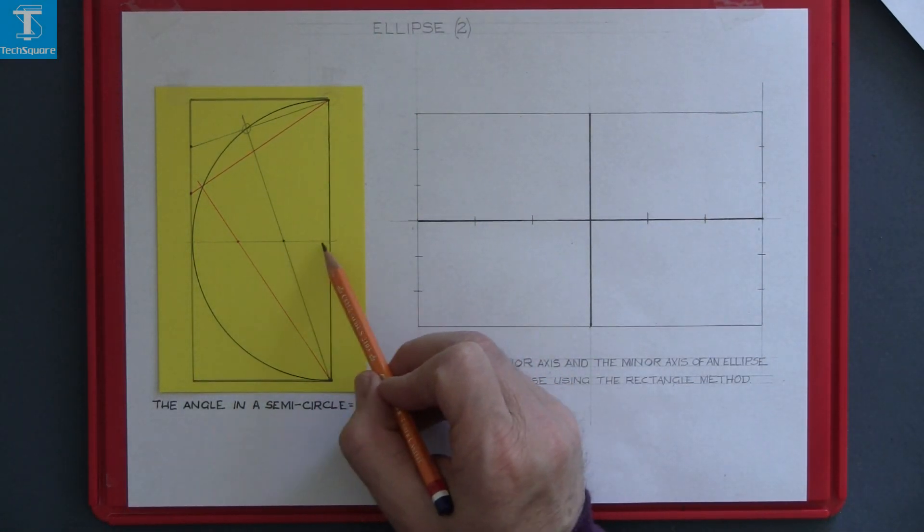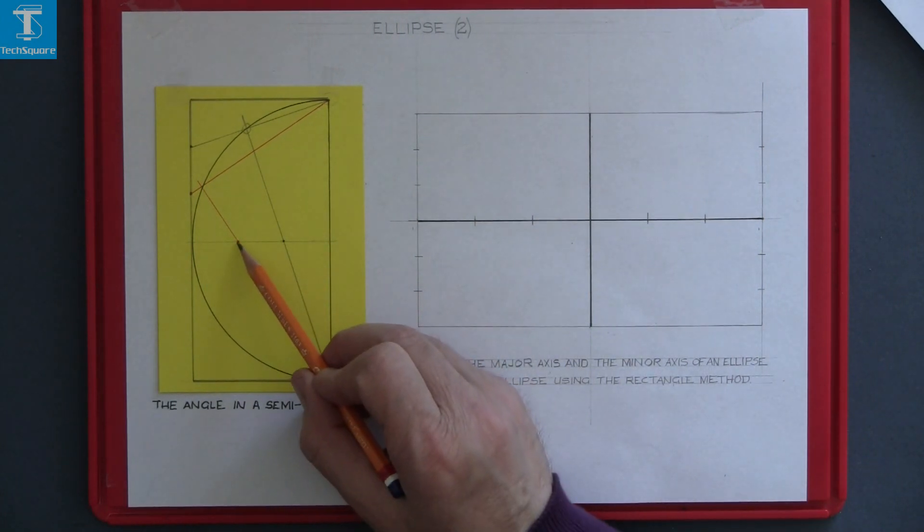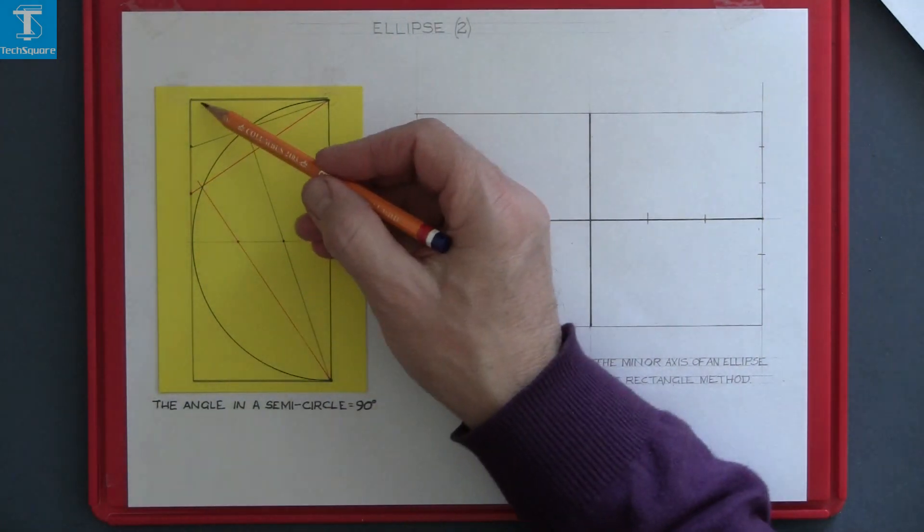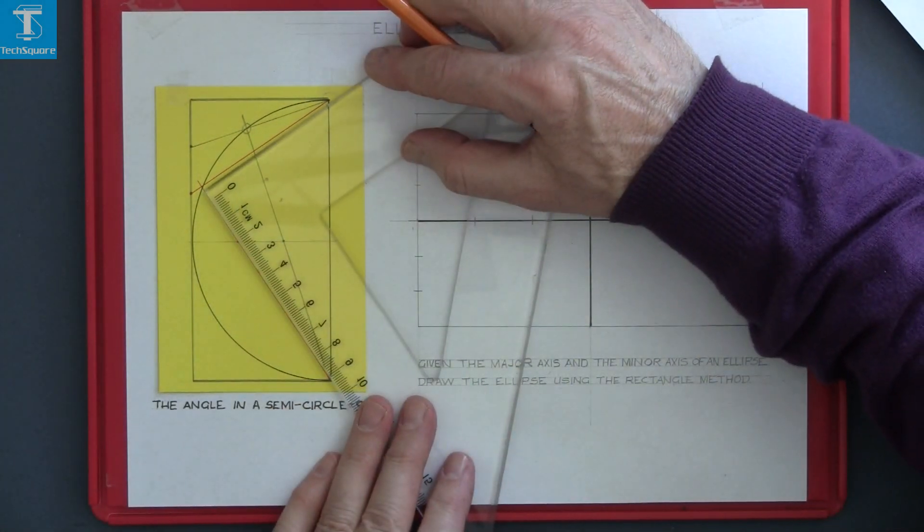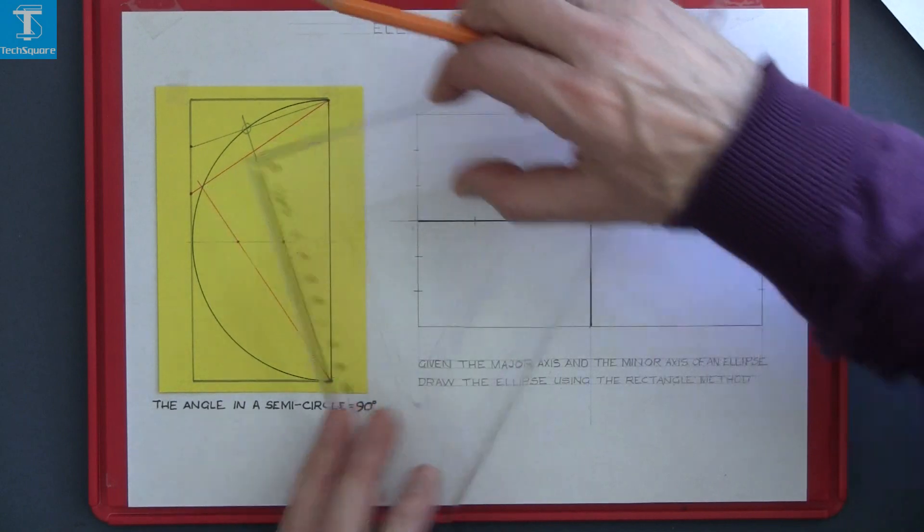I've repeated the same process with the red line drawn through the second point and drawn through the second point here and again where the two lines meet that's the angle in a semicircle, 90 degrees.